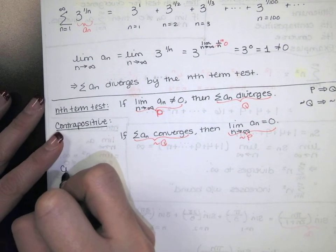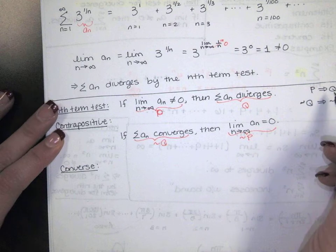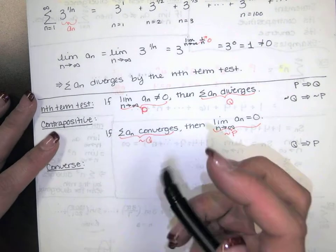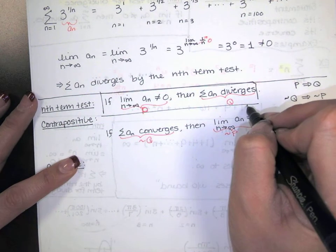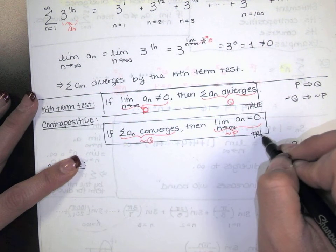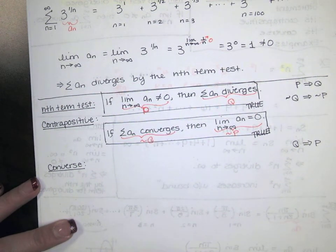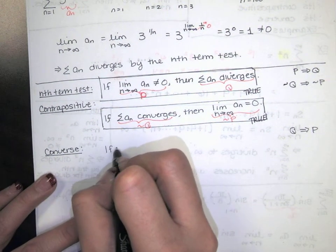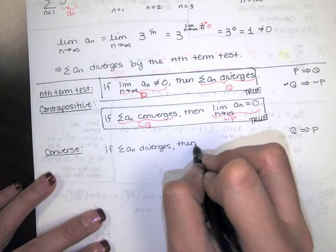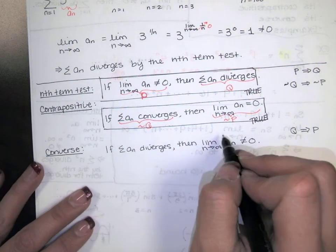Now here's something called the converse. If the original says p implies q, the converse is q implies p. The original statement and its contrapositive are both true. But the converse is not necessarily true. The converse would say: if the series diverges, then the limit as n goes to infinity of a sub n is not equal to 0. That is not true in general.